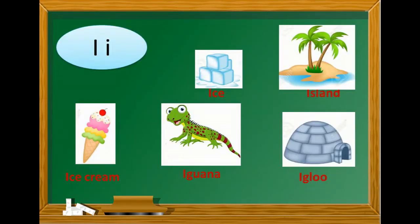I, capital I, small I. I for ice. I for island. I for ice cream. I for iguana. And I for igloo.